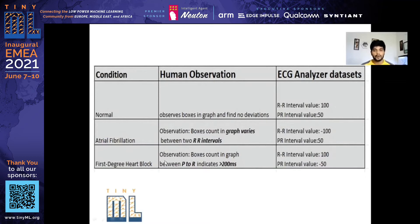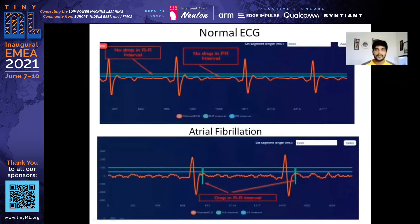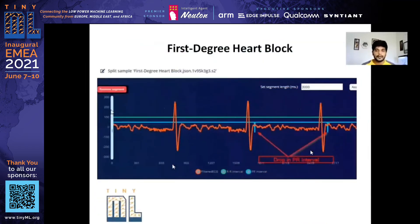For first degree heart block, whenever the time gap between P and R increases beyond 200 milliseconds, the PR interval value changes to minus 50. So in a normal ECG there will be no drop in R interval and no PR interval drop, but in atrial fibrillation cases there is a drop in the R interval wave to minus 100, and in first degree heart block there is a drop in the PR interval.